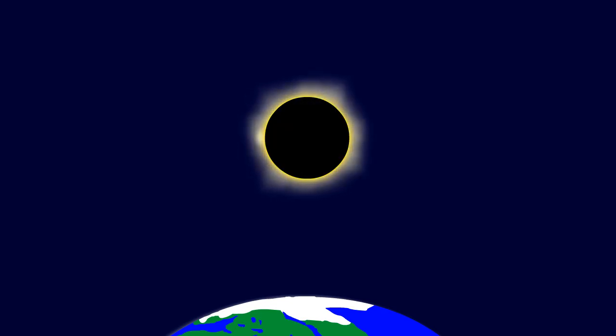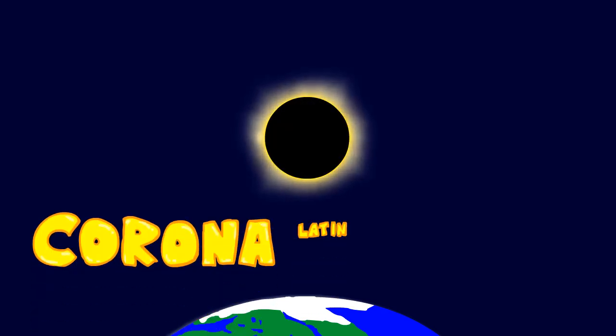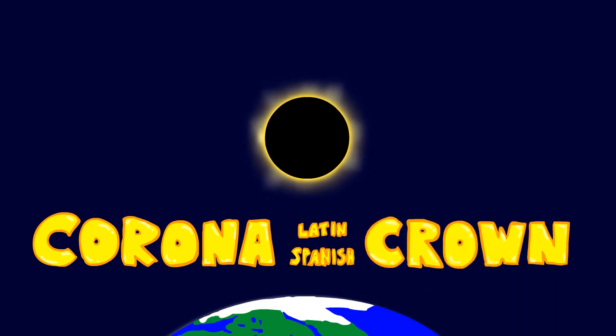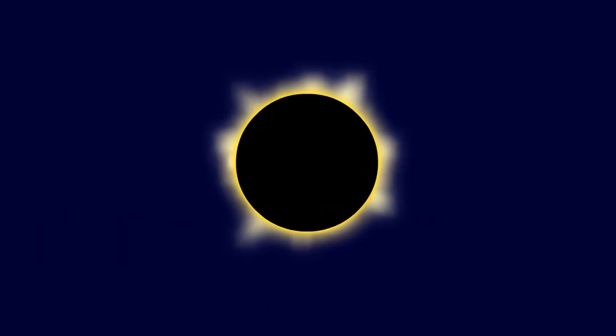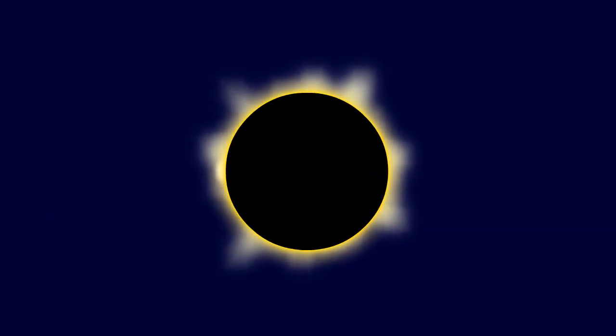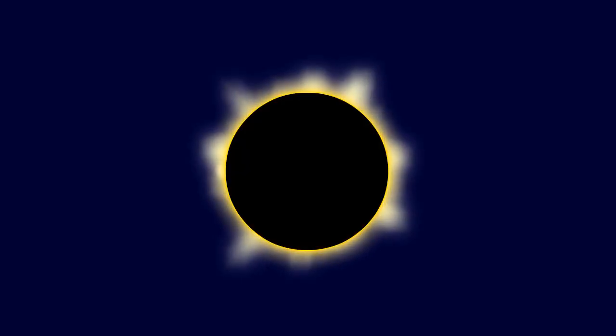That allows us to get a look at the Sun's corona, a Latin word in origin, today in Spanish, means crown. The corona is an area of superheated plasma that surrounds the Sun. We couldn't see it if the Moon didn't block out the rest of the light coming from the Sun.